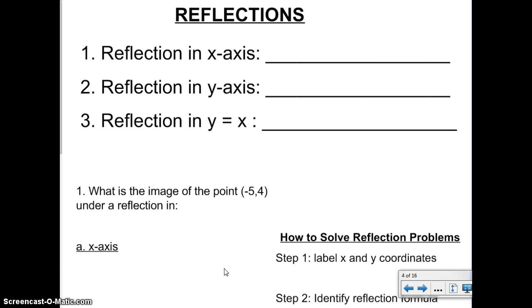Reflection in x-axis, y-axis, and in y equals x. A reflection in the x-axis: they give you your original point (x, y), and after the reflection in the x-axis, your new point is (x, -y). When you reflect in the x-axis, you switch the coordinate of the y. Now let's look at number two, reflection in the y-axis.